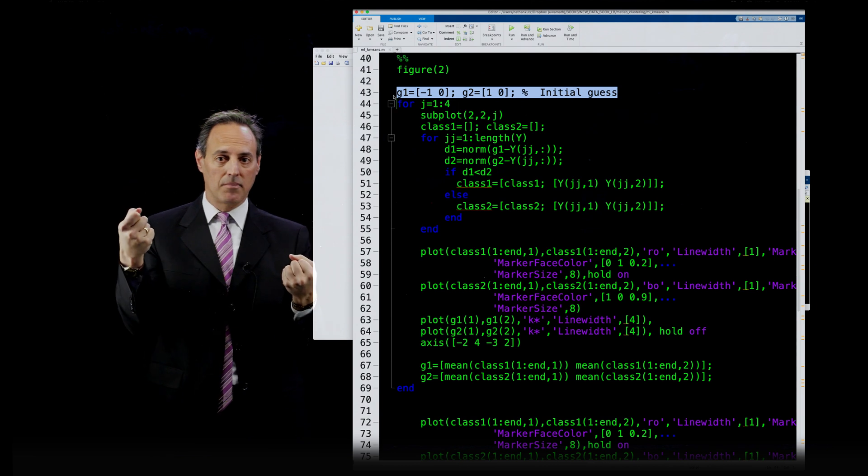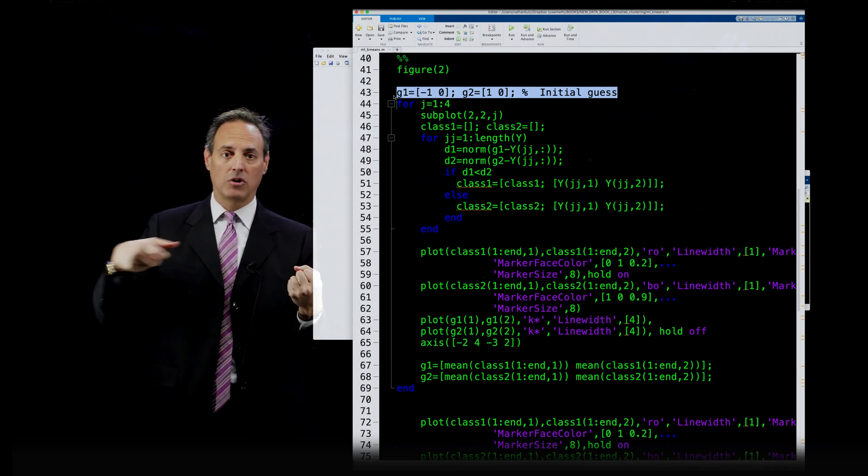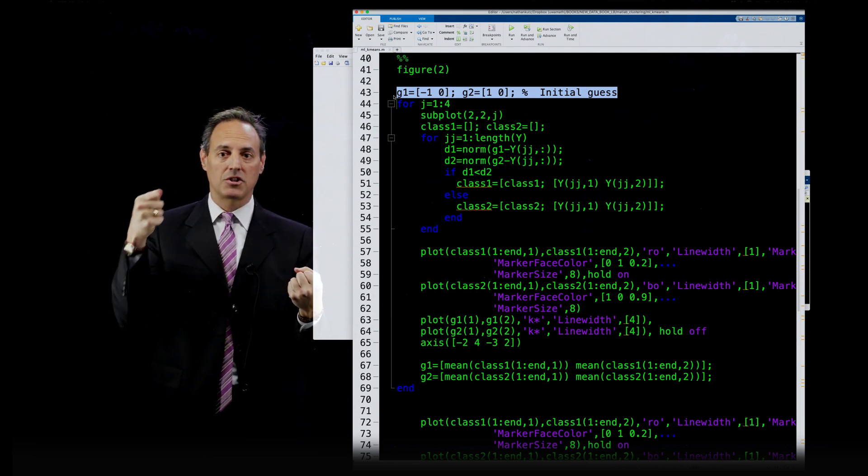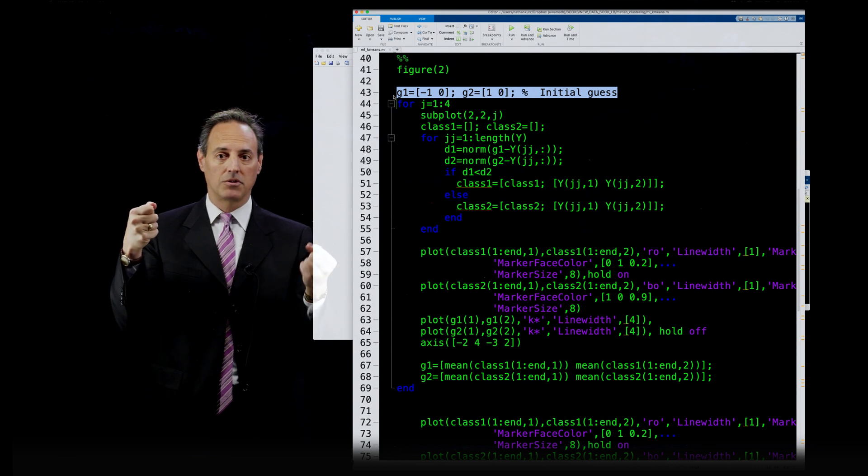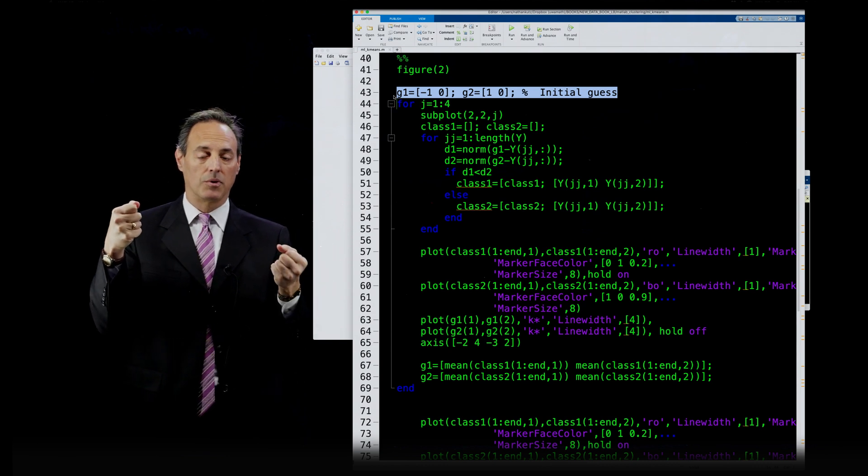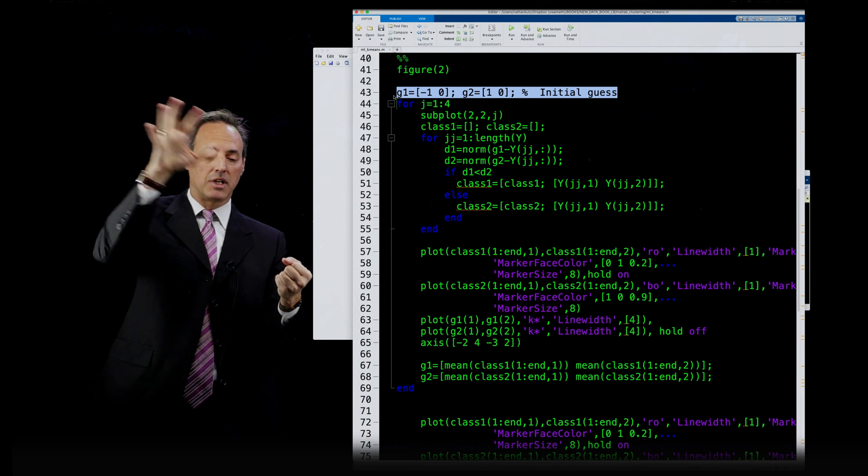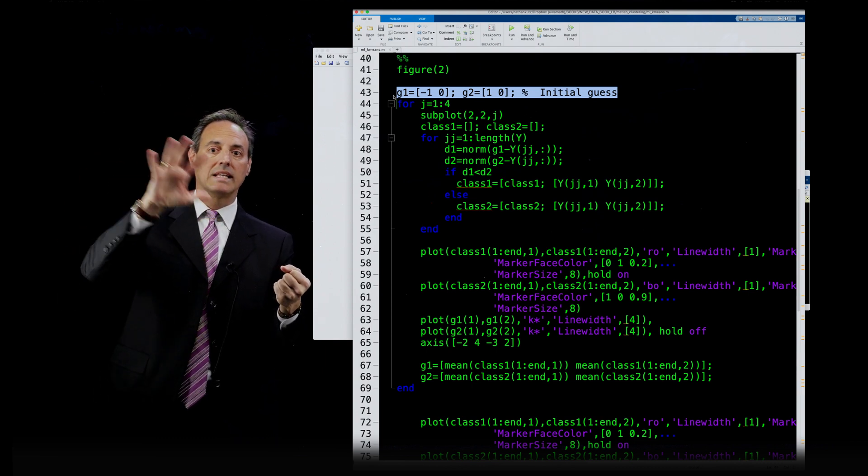And the way the algorithm works, I give you these two random guesses. All the points closest to this point are associated with this point. All the points closest to this point get clustered with this point.